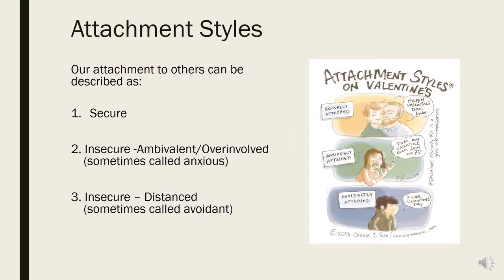In humans, it's been possible to observe different attachment patterns or strategies, as they're sometimes referred to. There's been a lot of research, and we can broadly notice three different attachment patterns, which we'll go on to explain in more detail. It's important to emphasise we're simplifying something that in reality is much more complicated. It's possible to show mixtures of these patterns in different relationships or at different times in our lives.